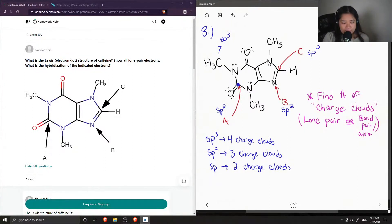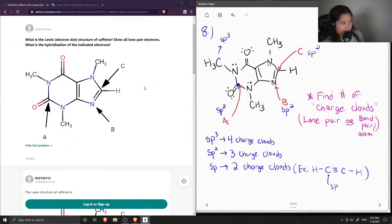And there's no example of any sp atoms, but an example—I'll just write one down here—would be if you had a carbon that was triple bonded to another carbon. This central carbon has only two charged clouds, so this would just be sp. Okay, so that's a brief explanation on how one can calculate hybridization.